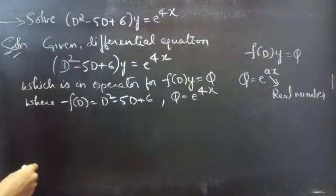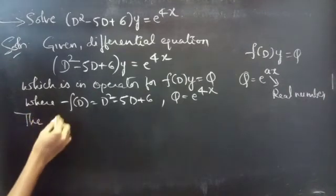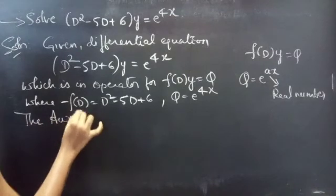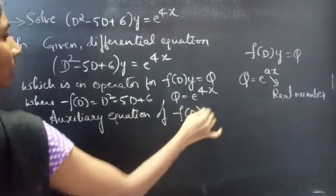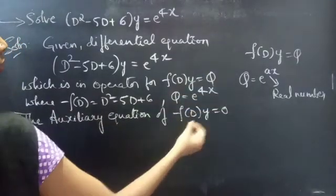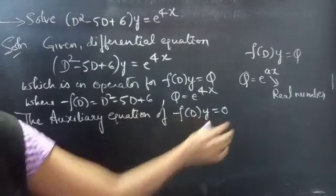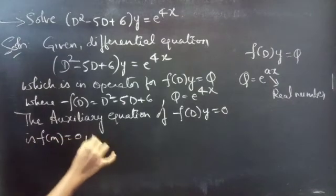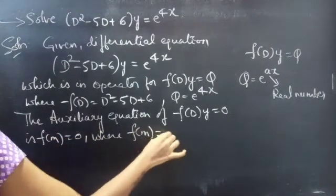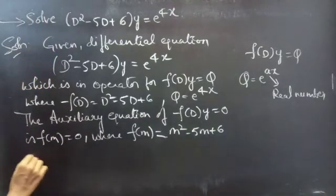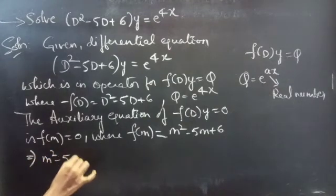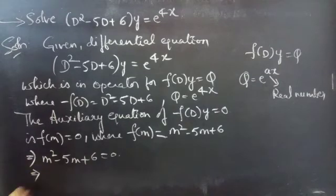We will first use the auxiliary equation to find the complementary function. For the auxiliary equation, we take f(D)·y = 0 and replace D by m, giving us m² - 5m + 6 = 0. We need to find the roots of this equation.